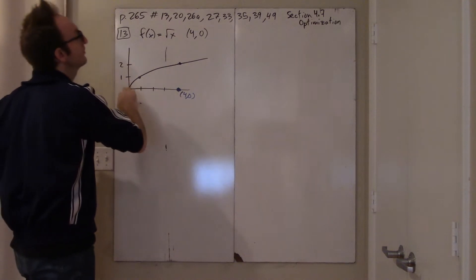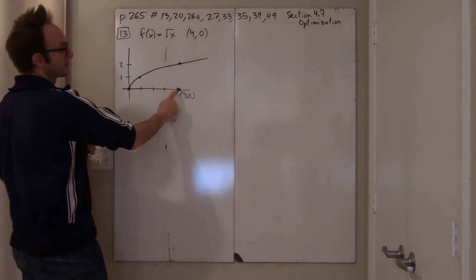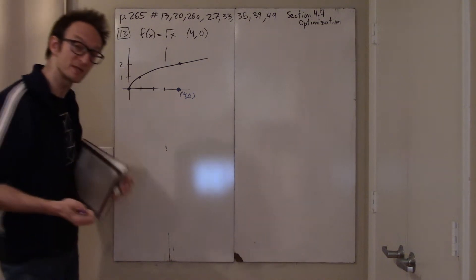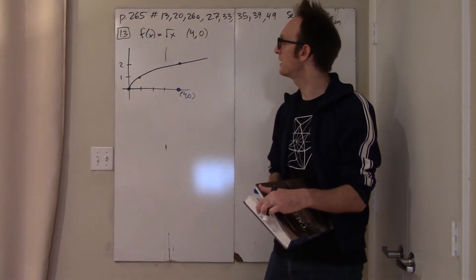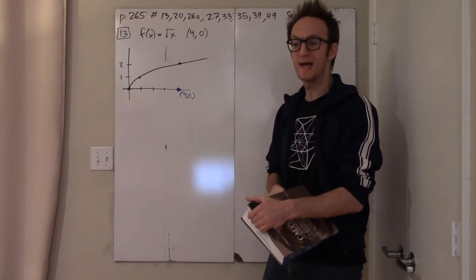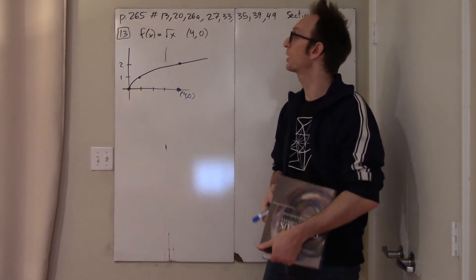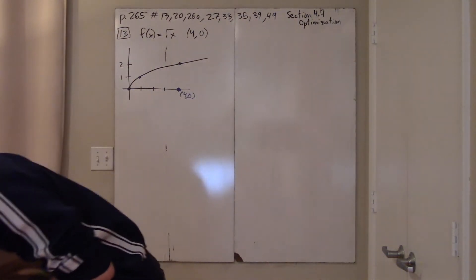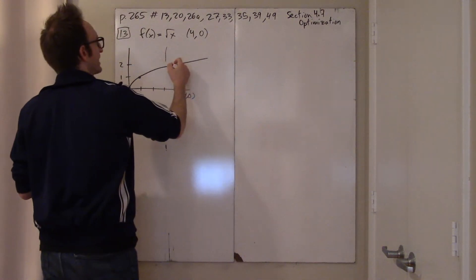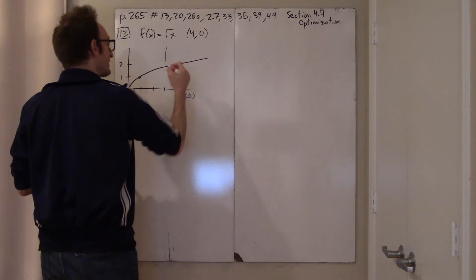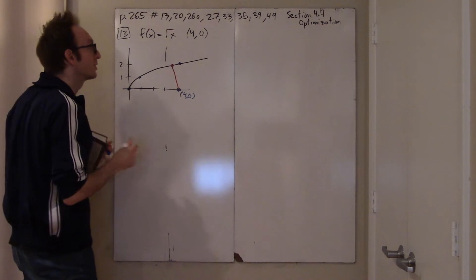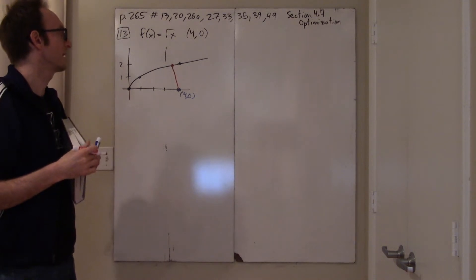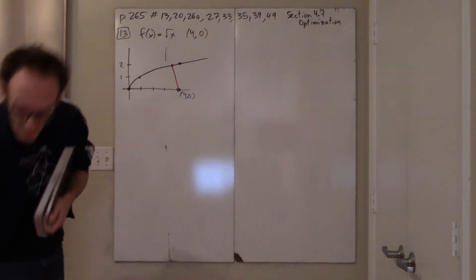If you have some object moving along the square root function and an observer at (4, 0), what's the point on the curve which is closest? Your instinct might be to drop a perpendicular — that's how you find the closest point to a line — but the closest point from a point to a curve is not necessarily that perpendicular. Roughly speaking, I think it's going to be somewhere quite close to (4, 2).